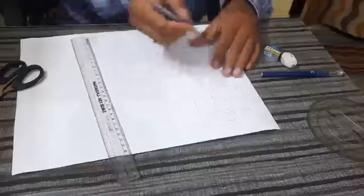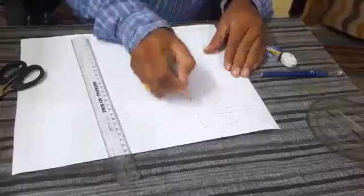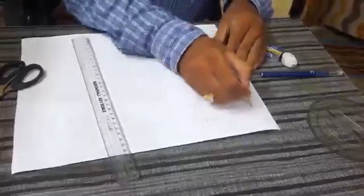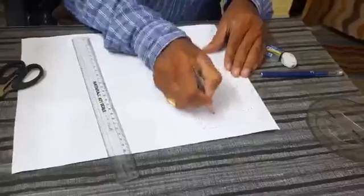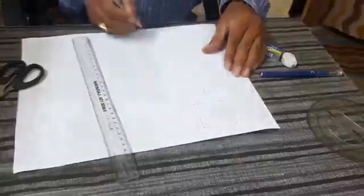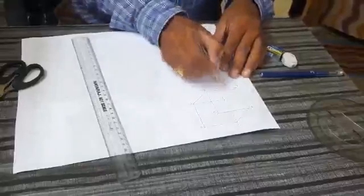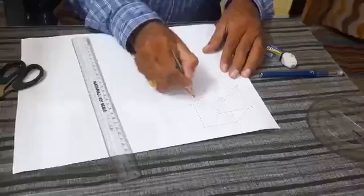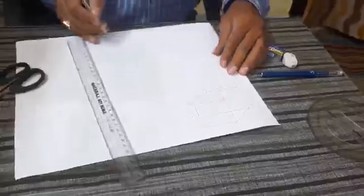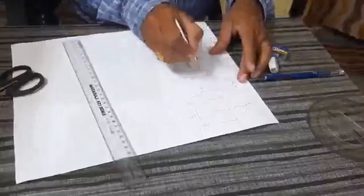Now we'll name it A, B, C, and D, and A dash, B dash, C dash, and D dash. And each side is 5 centimeter, so here length, breadth, and height equal to 5 centimeter.